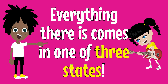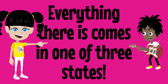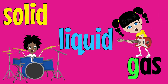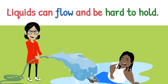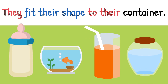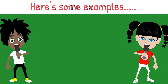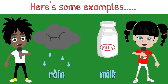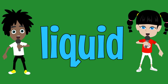Everything there is comes in one of three states — solid, liquid or gas. Liquids can flow and be hard to hold. They fit their shape to their container. The volume of a liquid always stays the same, no matter what shape it is. Here's some examples: water is liquid, soup is liquid, rain is liquid, milk is liquid, seas are liquid, oceans are liquid.